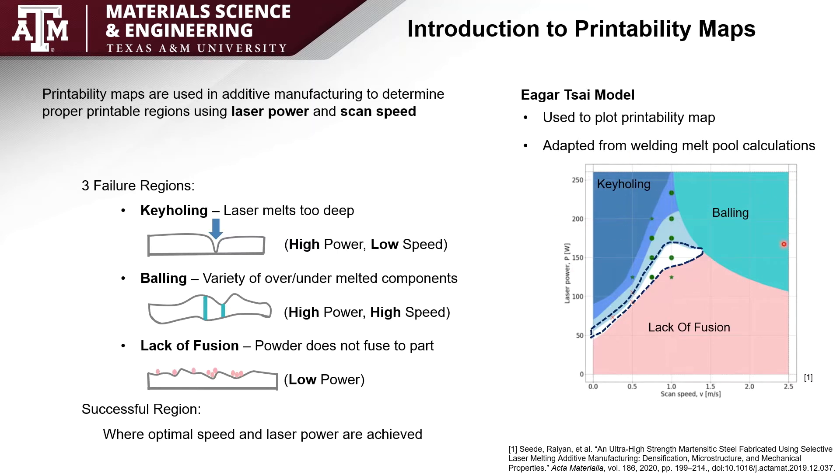You can see that there are three primary failure regions here: keyholing, balling, and lack of fusion. Keyholing occurs when there's too high power and too low speed. This means that the laser will melt through multiple layers and continue melting the same layers over and over again. With balling we have too high power and high speed. This can create a variety of over and under melted components that result in varying heights of the piece.